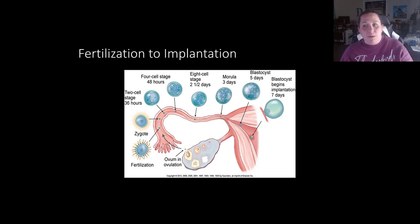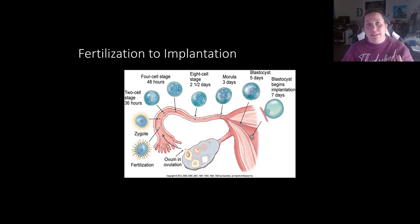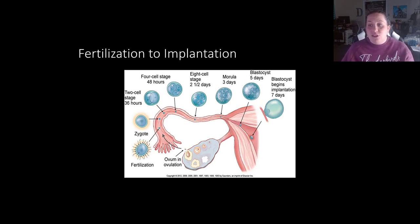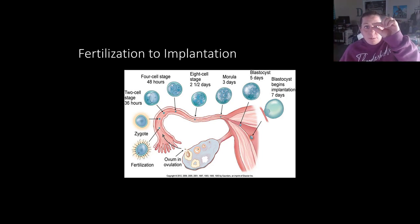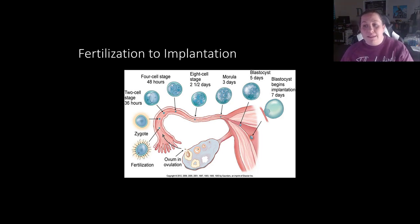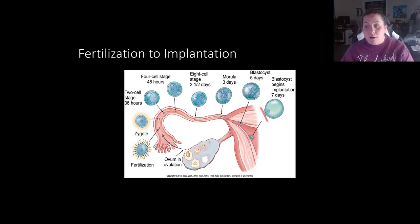The embryo receives nourishment from the glycogen secreted by the endometrium, because the umbilical cord doesn't magically appear — it has to grow through the process. It is during the embryonic stage that all of the organ systems form. This is a very early stage where the baby is super small, and it's a critical time of development. This is also the time that women don't always know that they're pregnant.